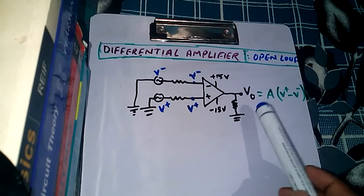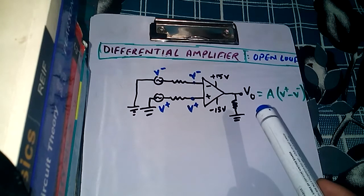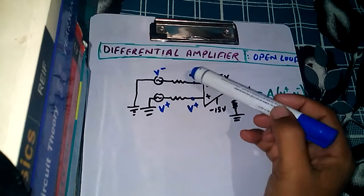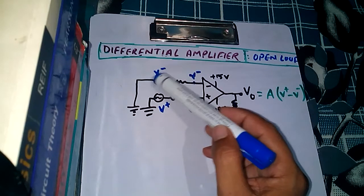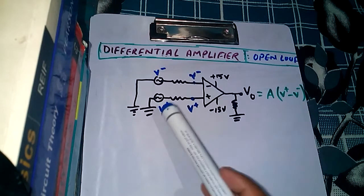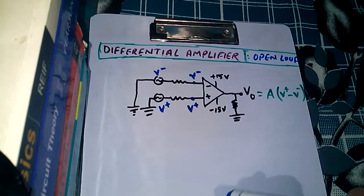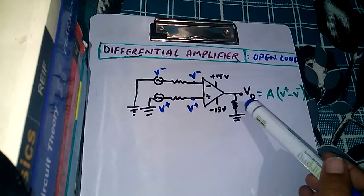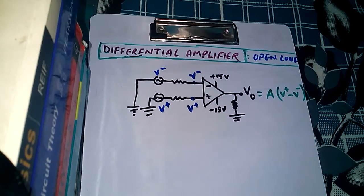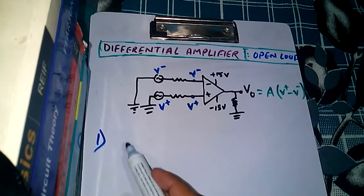In that condition we find the output. The second step is to ground the negative terminal — that means we eliminate the voltage available to the negative terminal — but the voltage to the positive terminal will be available, and in this condition we again find the output voltage. The third step is to add those two output voltages, and that addition is the final output for the differential amplifier circuit.